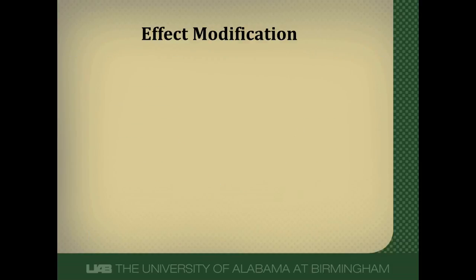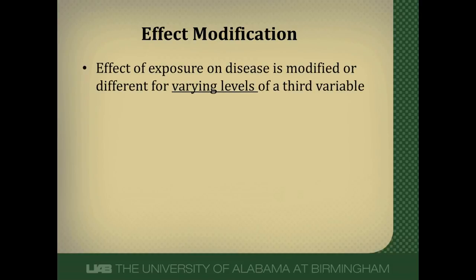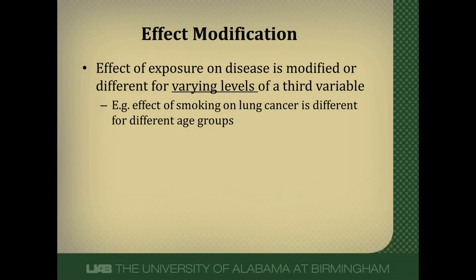Effect modification is very different from confounding. Effect modification occurs when varying levels of a third variable have a differential effect on the association between exposure and disease — the key is varying levels. For example, if we want to know whether age modifies the effect of smoking on lung cancer, we look at different age groups. Smoking in a 20-year-old compared to a 40-year-old or a 70-year-old would have a differential effect on lung cancer, so age would be an effect modifier of the association between smoking and lung cancer.